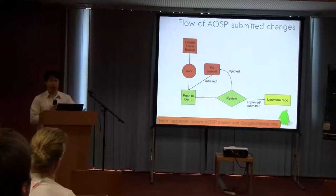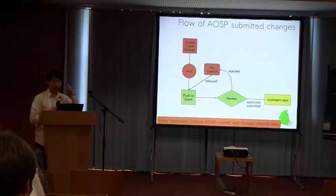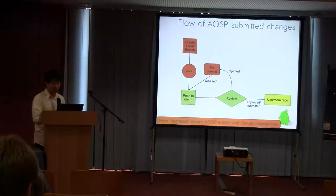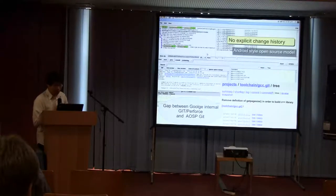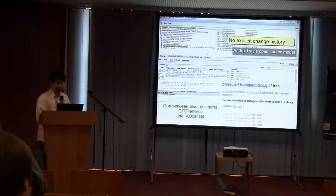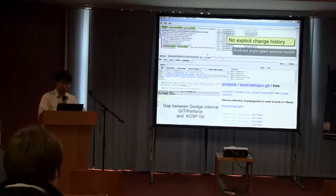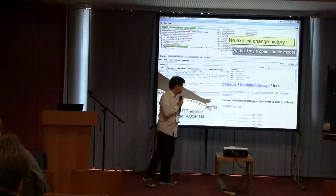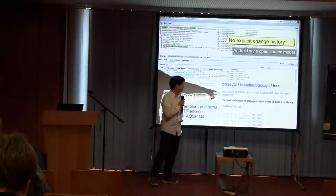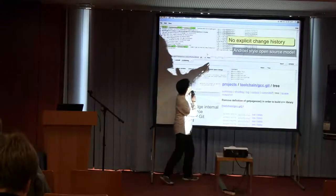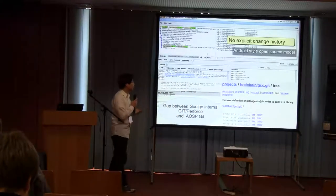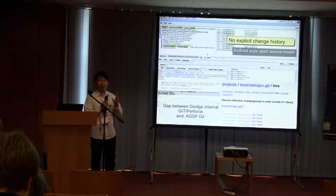You have to pay more attention to the strategy when making a contribution or working with Google engineers. Another problem is that for some repositories there is no explicit change history. For example, GCC itself has a log history, but if you check AOSP, you only see very small, squashed history. I call it the Android-style open source model — you have no idea about the detailed changes.